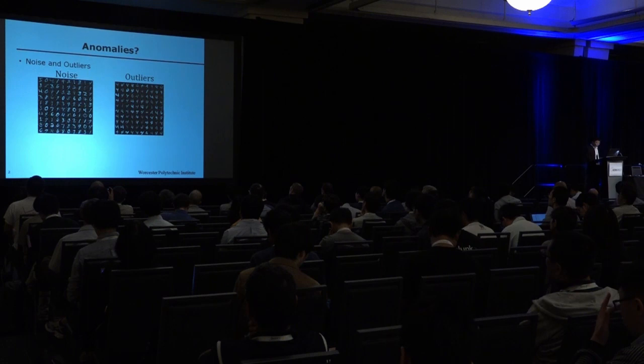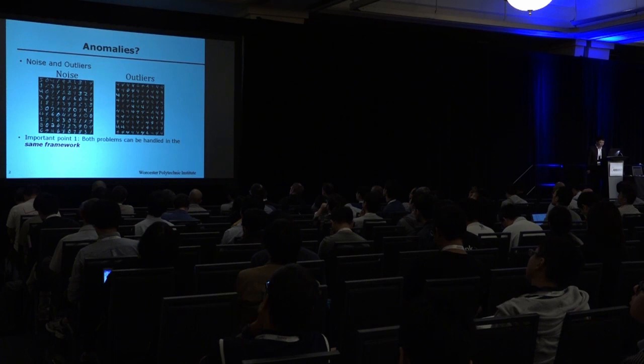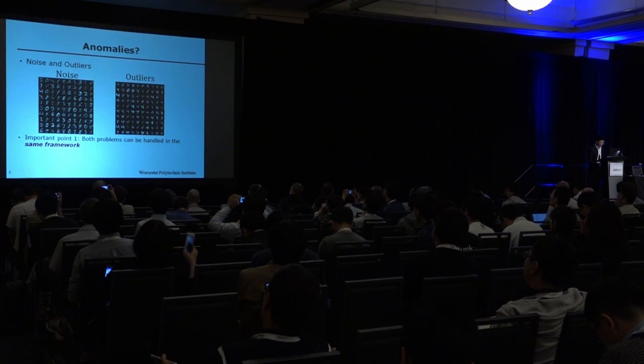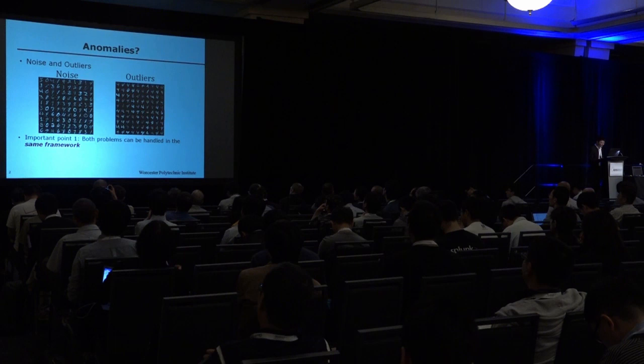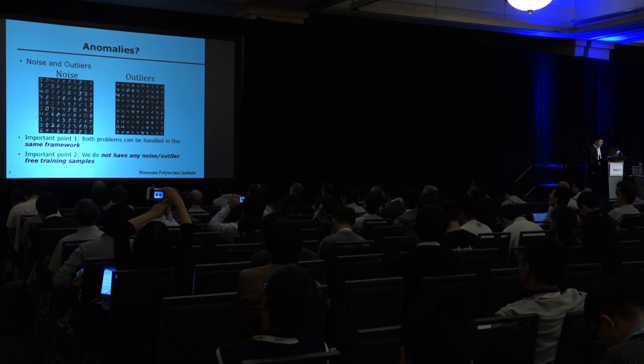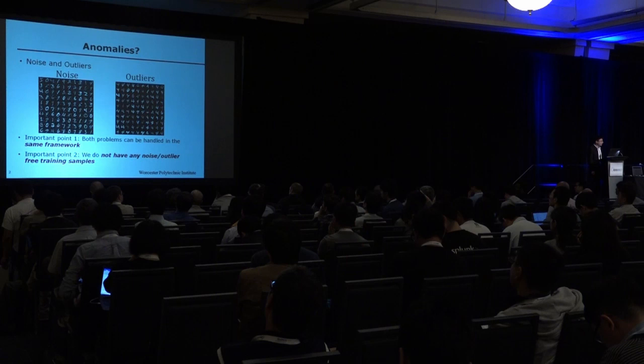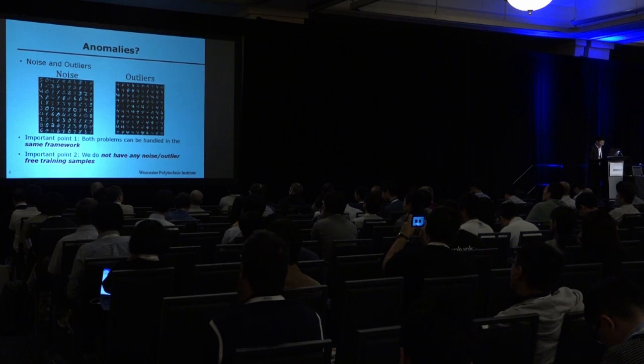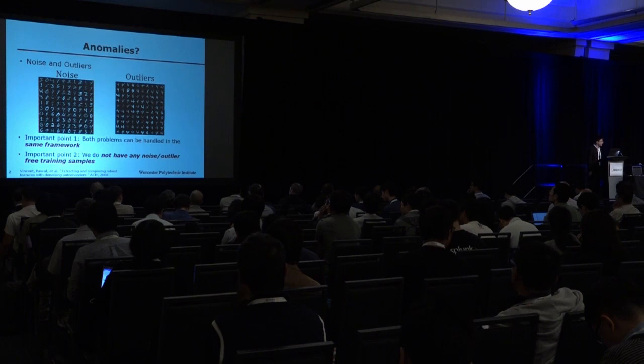The first thing I want to say is that both problems — denoising and detecting outliers — can be handled in the same framework: our robust deep autoencoder. Second, when we train our model, we do not have any noise or outlier-free training samples. For example, when denoising, we do not have any noise-free images. This is a major difference from the denoising autoencoder in the literature.